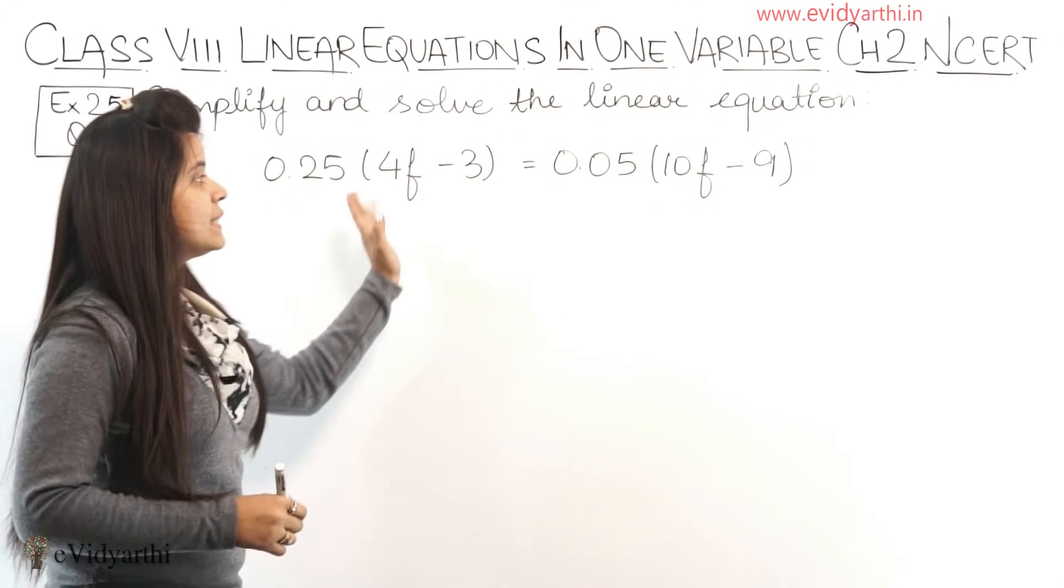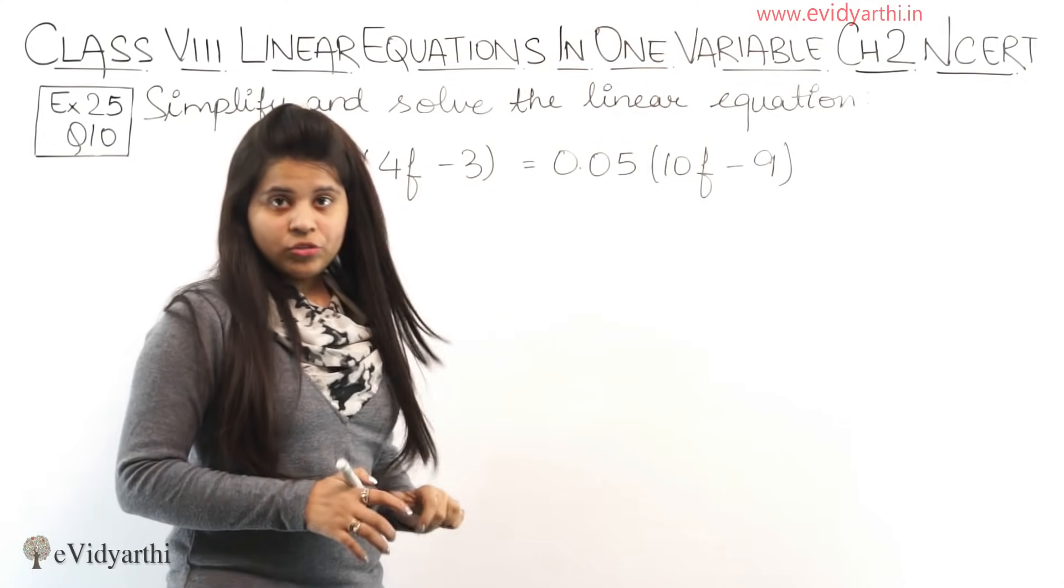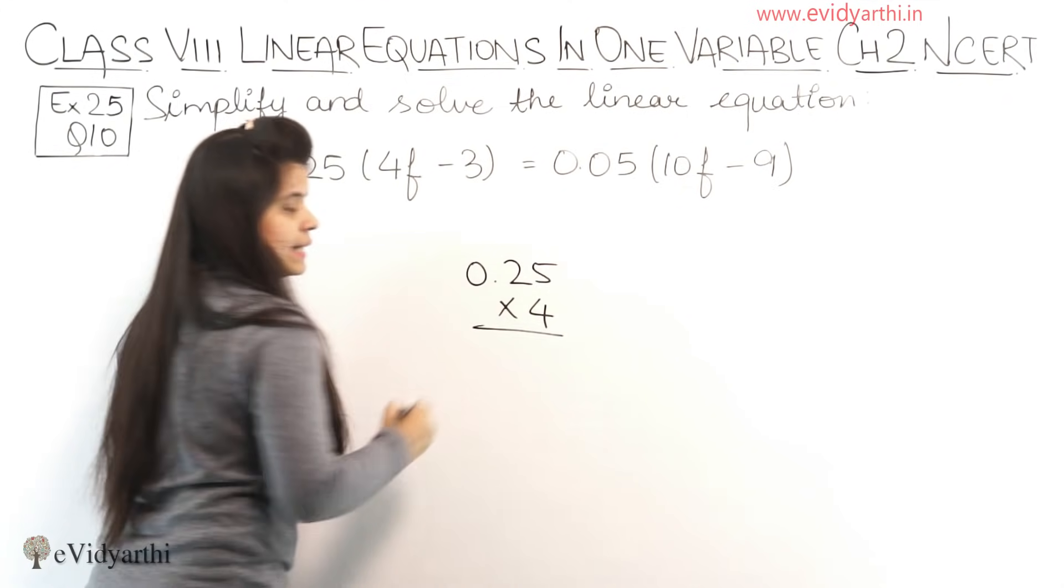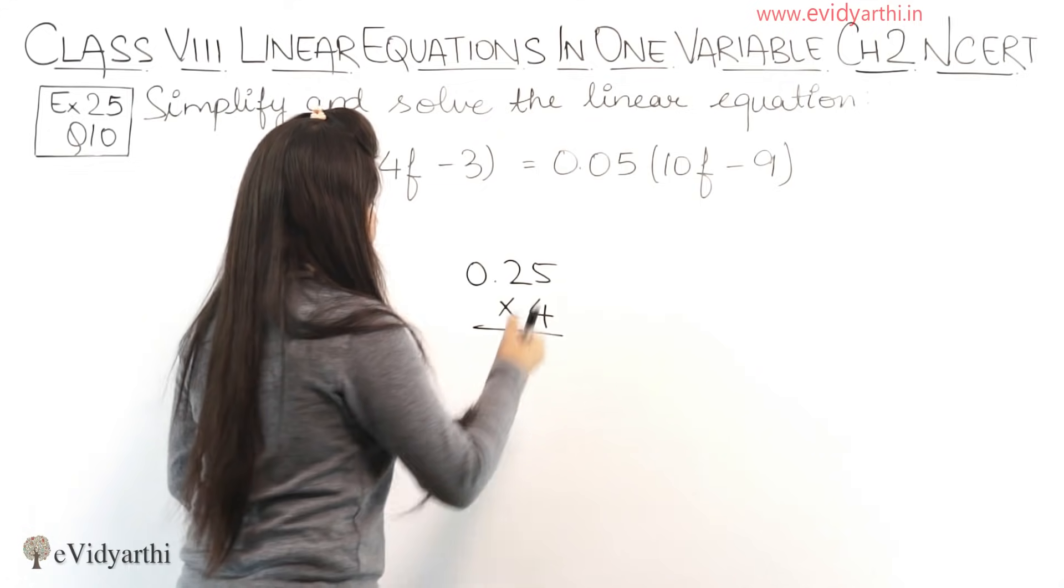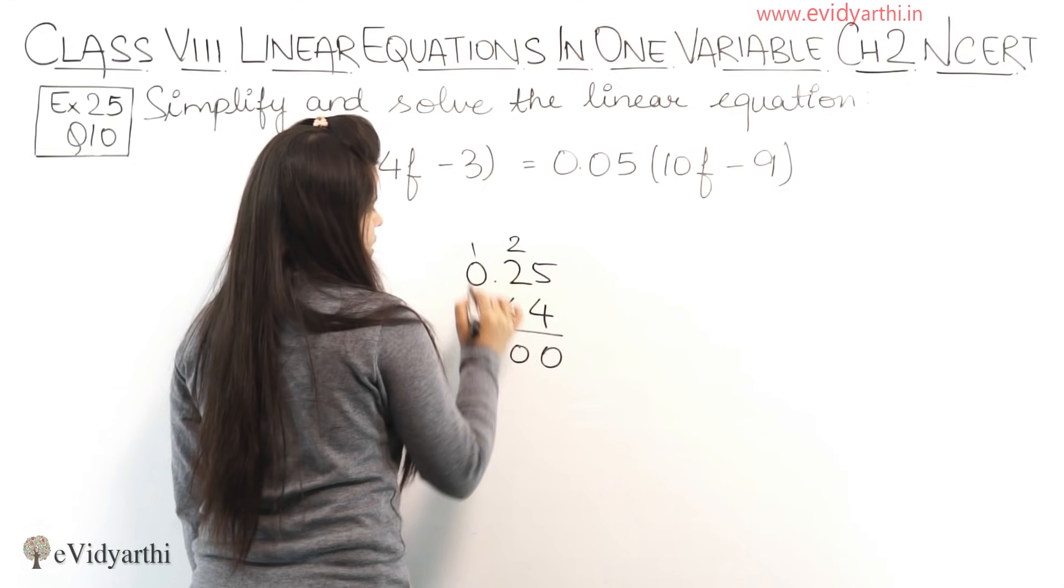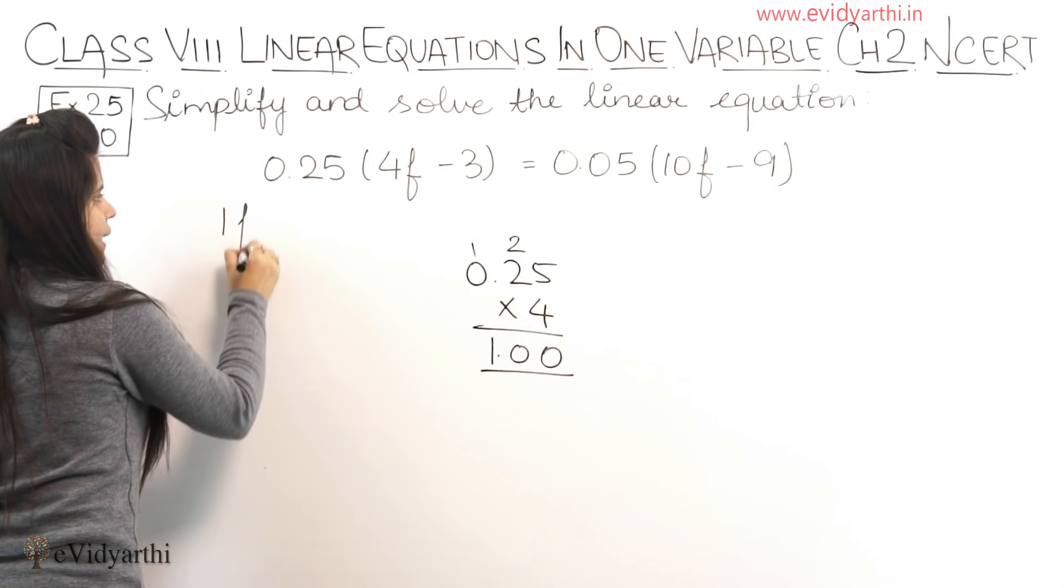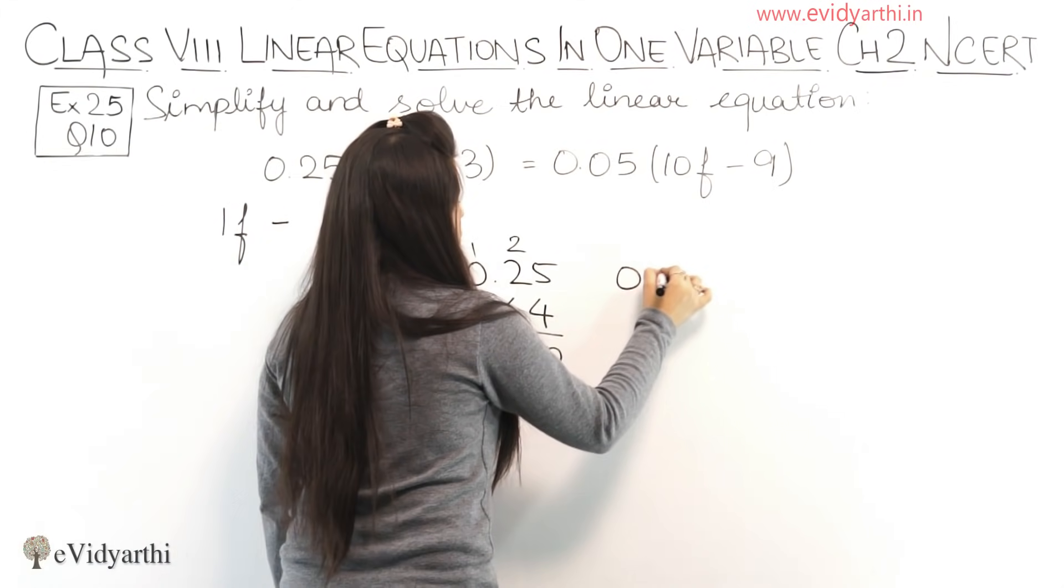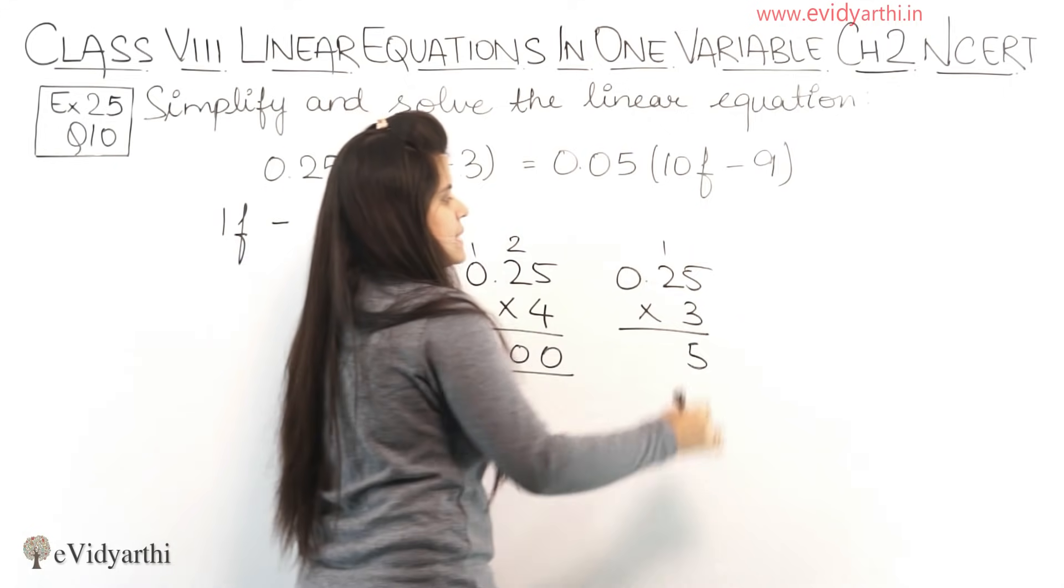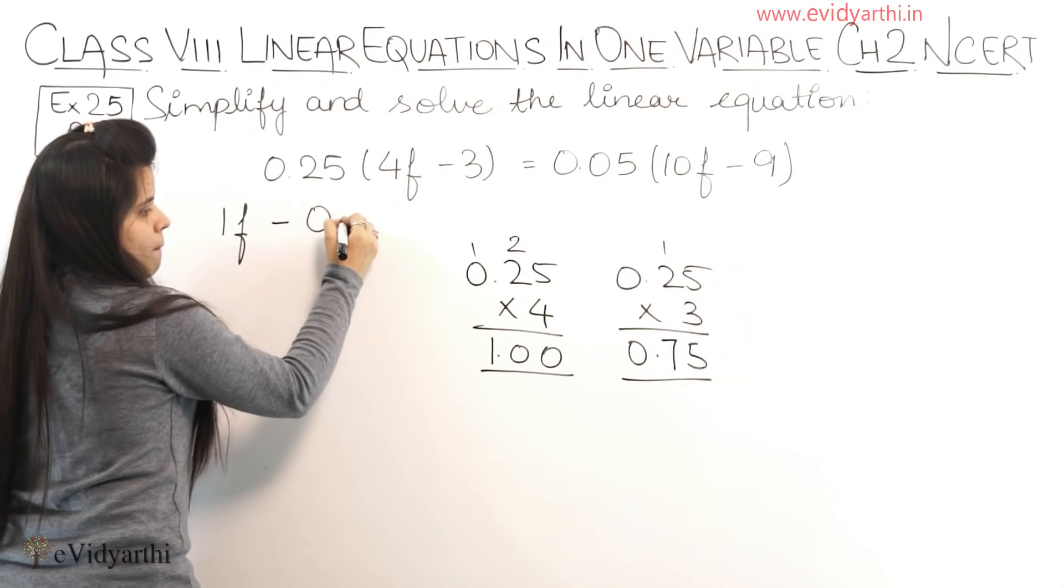First we have to multiply the brackets with the other numbers. So 0.25 will multiply with 4f and then with 3. So 0.25 into 4: 5 into 4 is 20, then 4 into 2 is 8 plus 2 is 10, and four zeros are 0. So we have 1.00 which is basically 1f minus 0.25 into 3. 5 threes are 15, 3 twos are 6 plus 1 is 7, then 3 zeros are 0. So we have 0.75.